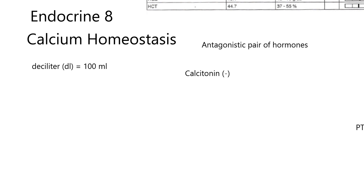The two hormones are calcitonin — and I put a minus behind it to say it tends to lower blood levels of calcium — and parathyroid hormone. The previous lessons talked about these hormones. The plus behind parathyroid hormone says it tries to elevate blood levels of calcium. You should be able to reproduce these graphics showing where these hormones come from, their target tissues, and what they do when they get there.